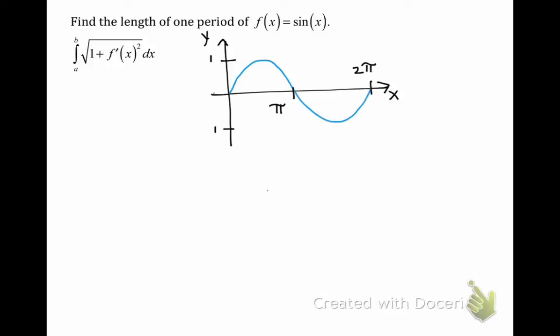On the left, we see our formula for the arc length of f of x on the interval from x equals a to x equals b. This formula comes from approximating our curved function with straight line segments, because we know how to find the length of a straight line using a distance formula.